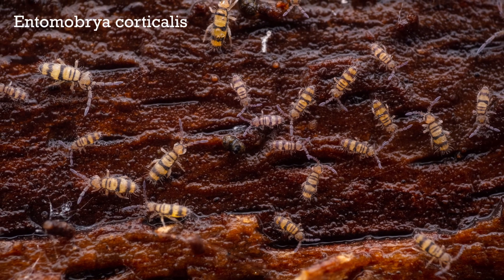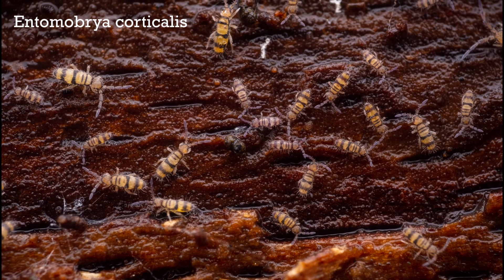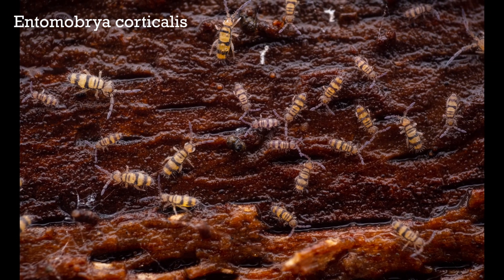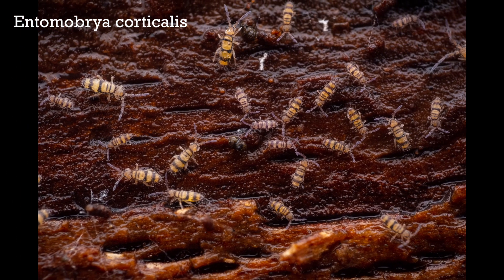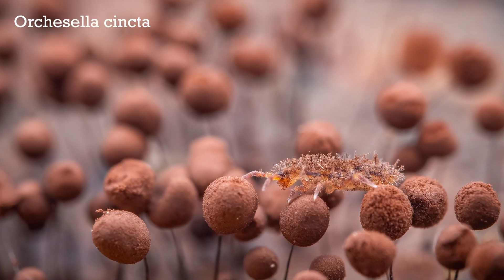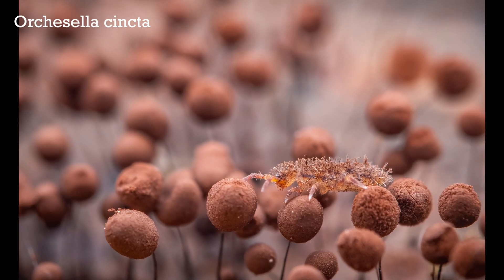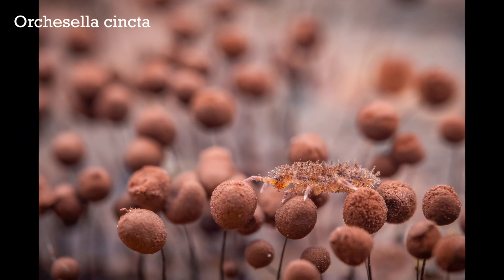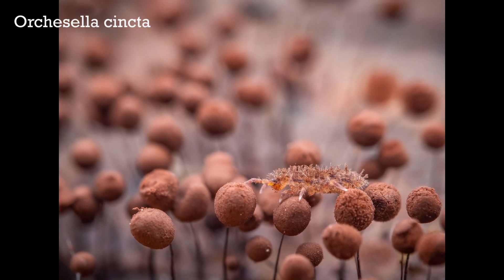Now in many parts of the world, springtails are among the most abundant animal groups, and they play a vital role in soil ecology by eating dead organic matter and helping with decomposition.